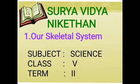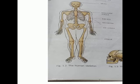Dear students, what is our 1st lesson? Our skeletal system. In this class, we are learning about the human skeleton. The human skeleton is a framework of bones. This framework of bones encloses and protects all the internal organs and gives support, strength and shape to the body. We do have a set of bones. We call them the skeletal system.